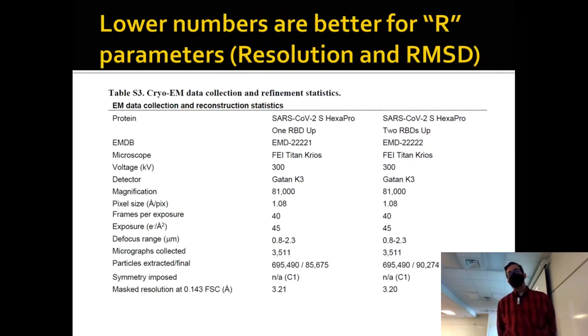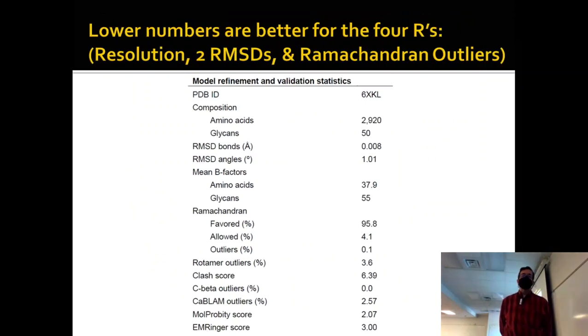So when you're looking at a structure paper, you want to look for the R parameters. There's resolution and RMSD are two of them. And in fact, I have more of them on the next slide. There's resolution, there's actually two versions of RMSD. And then there's Ramachandran outliers. We've already talked about resolution quite a bit. And in fact, on this, looking up and down this chart, I only see the resolution at the very bottom. And you see that it's very similar. You can also see how much data it takes to do this, because you have 700,000 particles extracted. And the other thing is that you see the voltage, it takes 300 kilovolts. That's pretty much all I know. But I can look at the resolution on these. And again, this is the one that they found was a really good stabilized version of the pre-fusion form. And they got one form with one RBD up and one form with two RBDs up, because of the flexibility of the molecule.